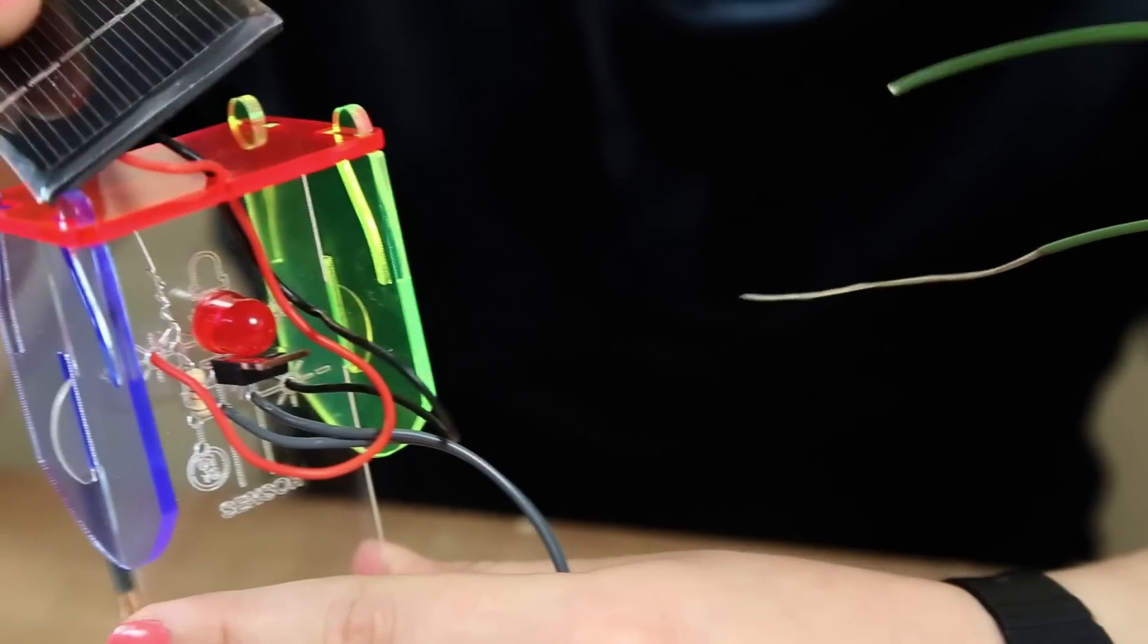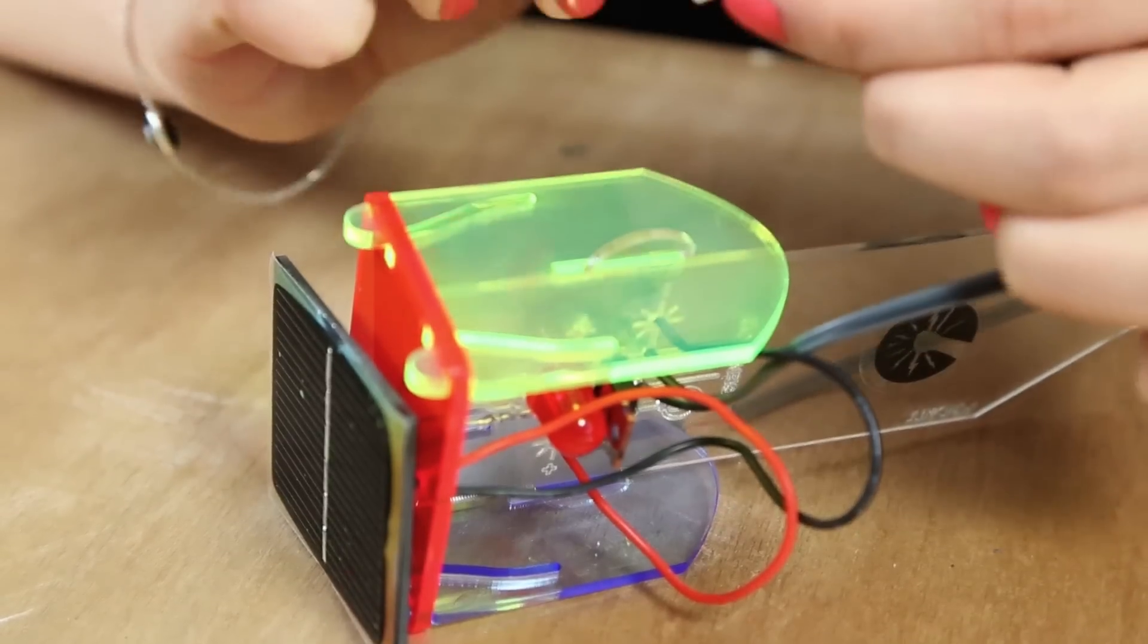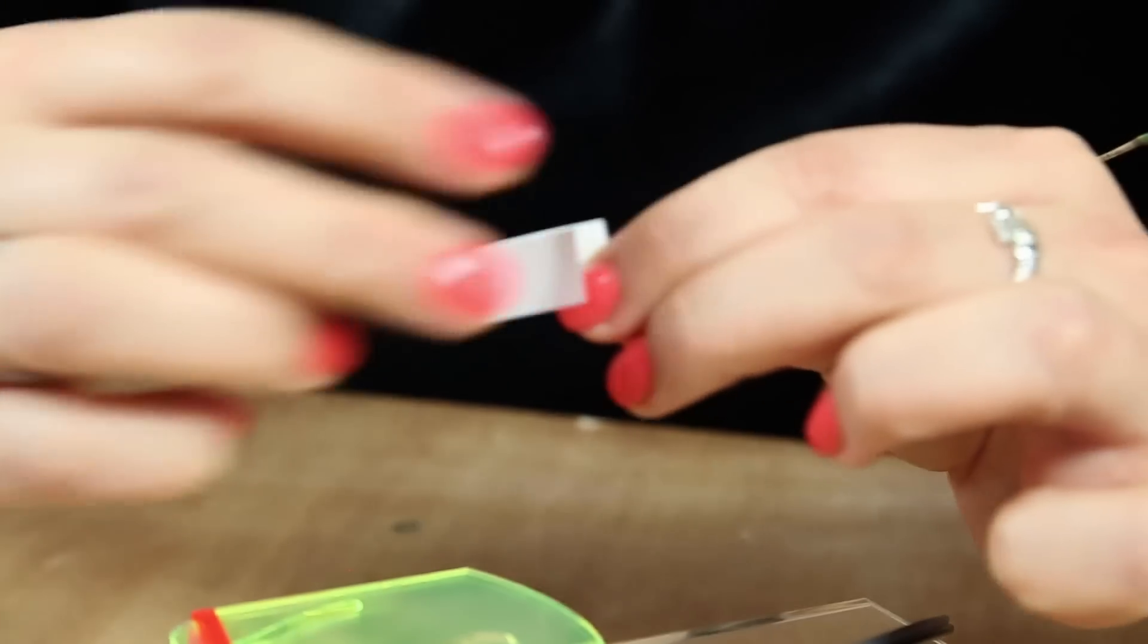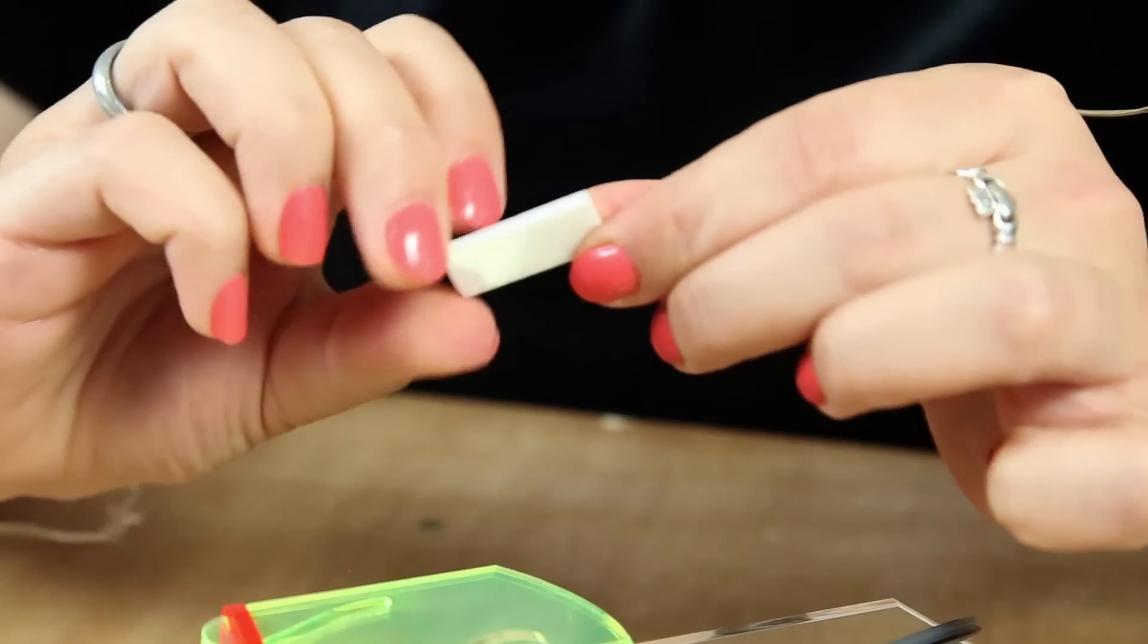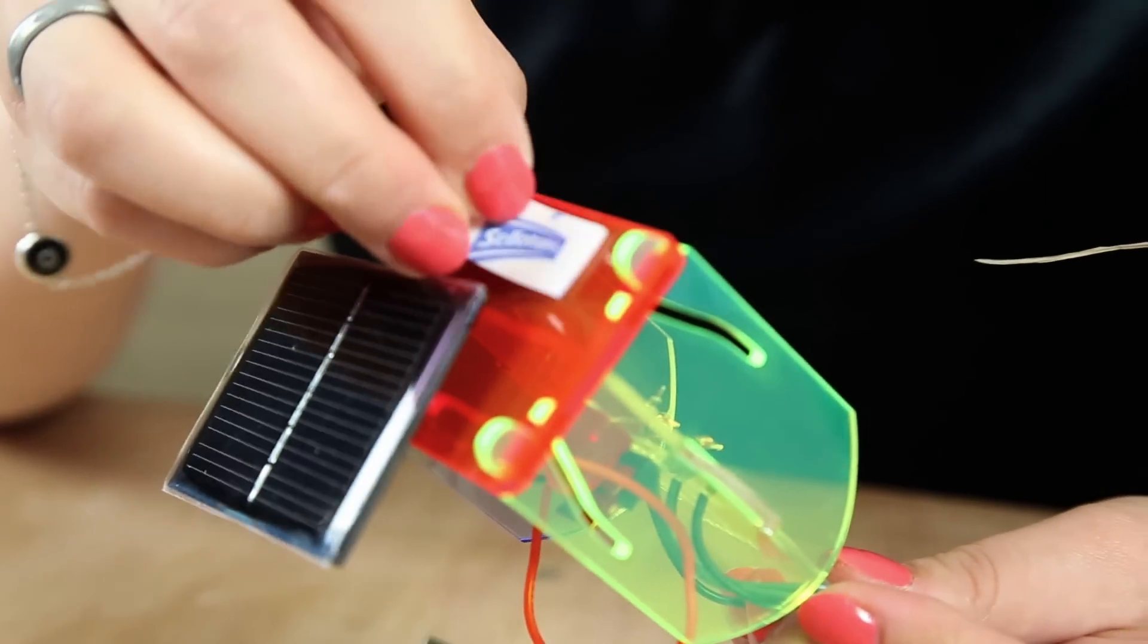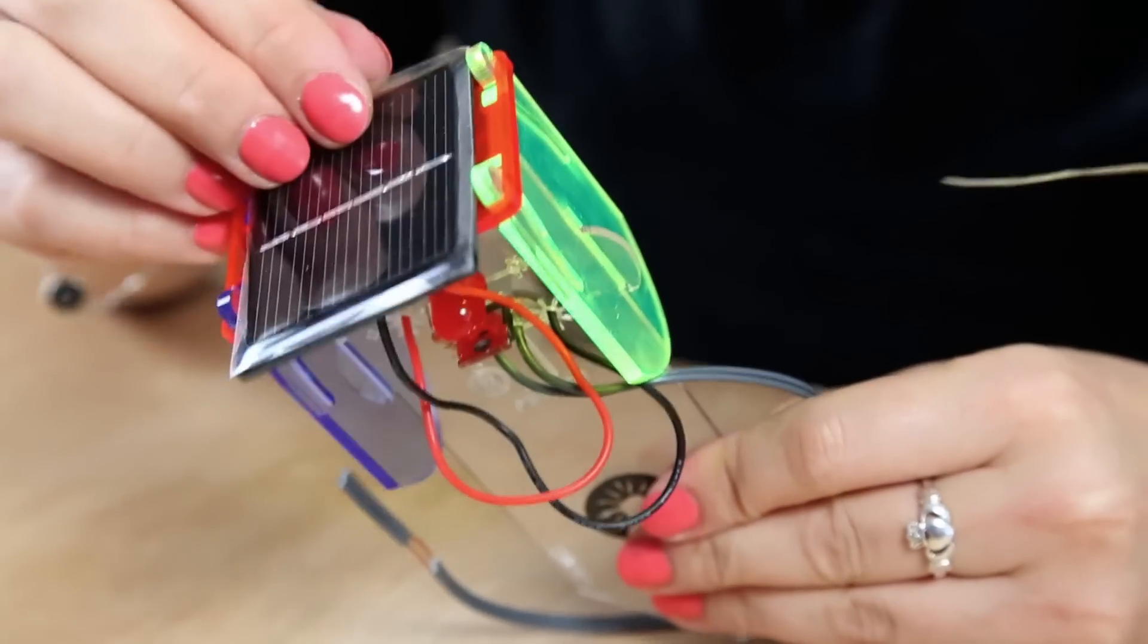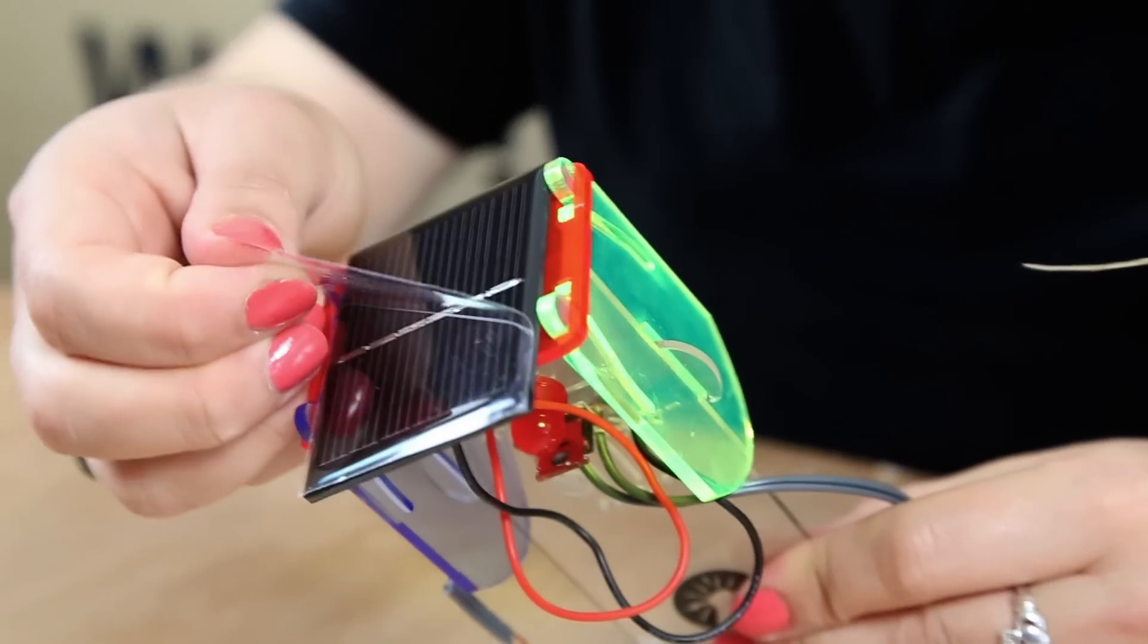So now you want to secure your solar panel onto the top red bit. So if we just take one part of the sticky off like that and press it onto the lid. And we also want to make sure that we take the film off the solar panel because this makes the solar panel more efficient.